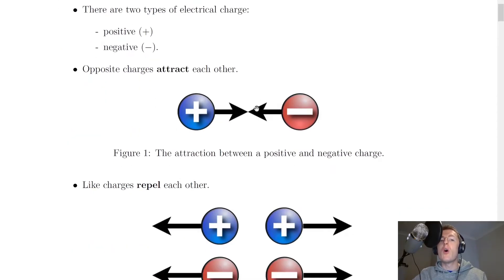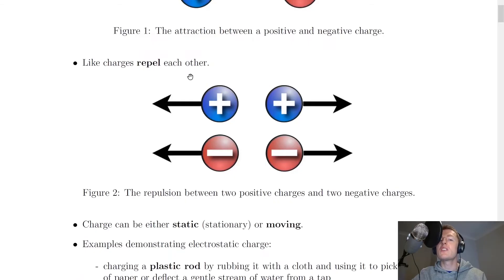You should know that opposite charges attract each other. So if you were to bring a positive charge and a negative charge near each other, they will actually want to come together. But if you have two like charges, like two positive charges near each other or two negative charges near each other, then these will want to repel each other and get away from each other.